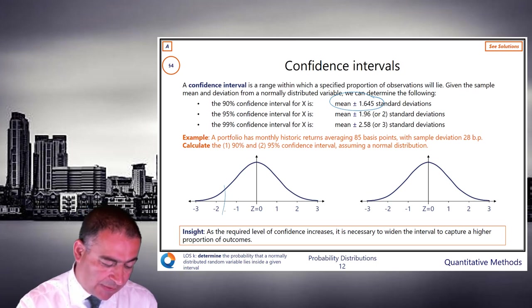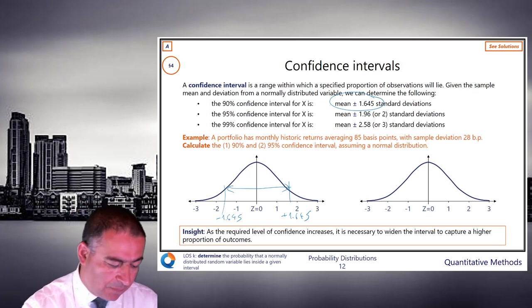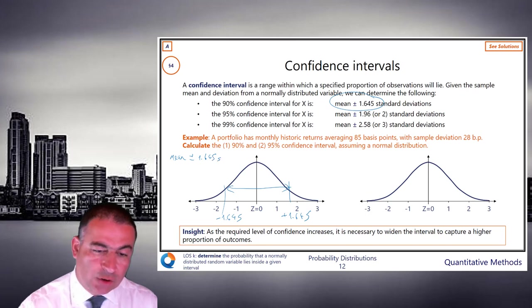So let's say that's minus 1.645. And let's say that's plus 1.645. This range captures 90%. And we know that.